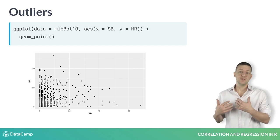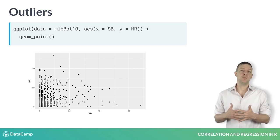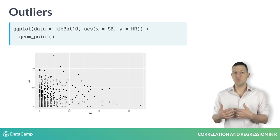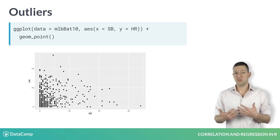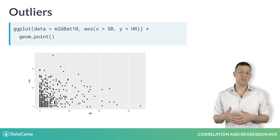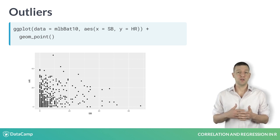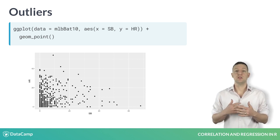In this scatterplot, we consider the relationship between the number of home runs hit by Major League Baseball players in 2010 and the number of bases they stole. Home runs are a measure of batting power, while stolen bases are a measure of foot speed. It is not surprising that we see a negative relationship here, since power and speed are generally considered complementary skills.